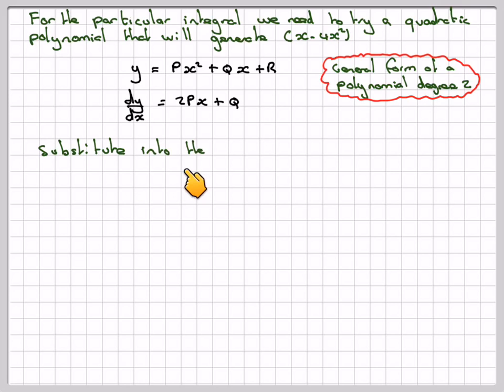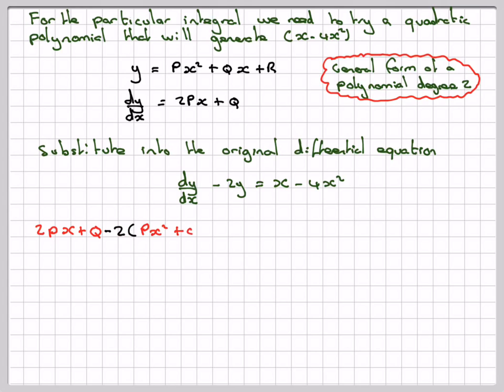And then we substitute this into the original differential equation, which was dy/dx minus 2y is equal to x minus 4x squared. So substituting that in, 2px plus q minus 2 brackets, minus 2y px squared plus qx plus r. And that's got to be equal to x minus 4x squared.